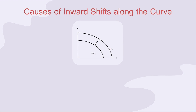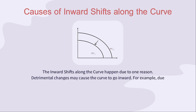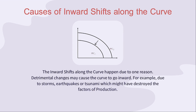Now, we'll see the reasons for the inward shift in the curve. The inward shifts along the curve happen due to one reason. Detrimental changes may cause the curve to go inward — for example, due to storms, earthquakes, or tsunamis which might have destroyed the factors of production.